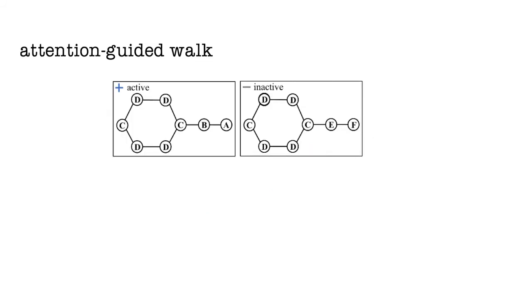To obtain an embedding for a graph, we use what is called an attention-guided walk. Our agent starts at a random node in the graph and it can only take a fixed number of steps to gather information about the graph.